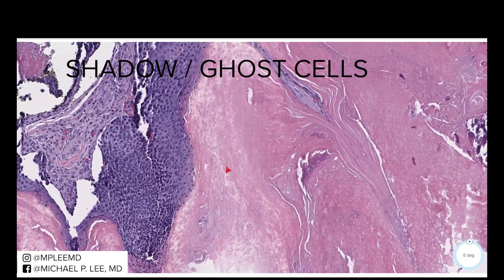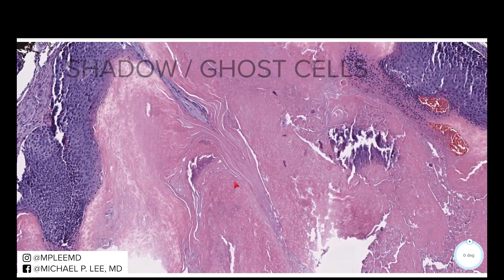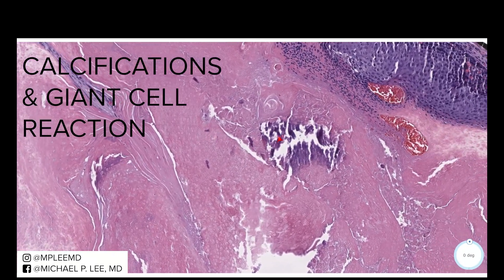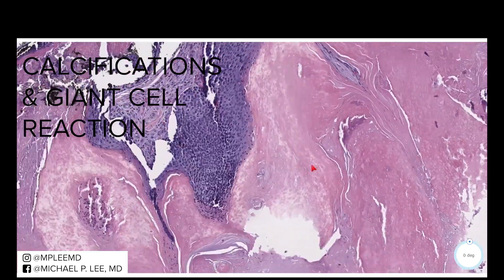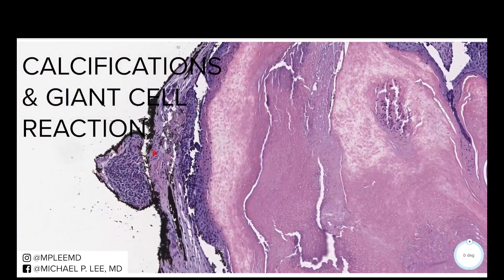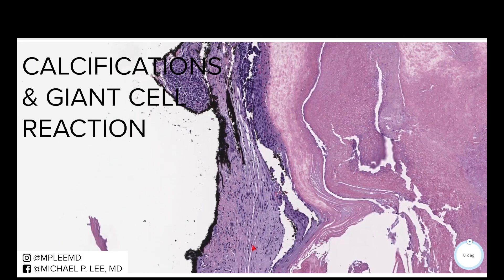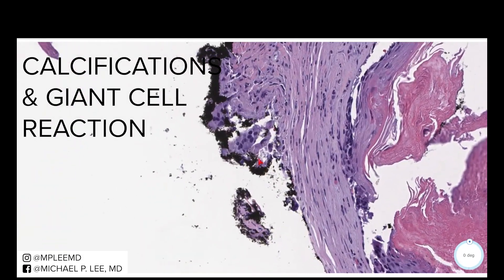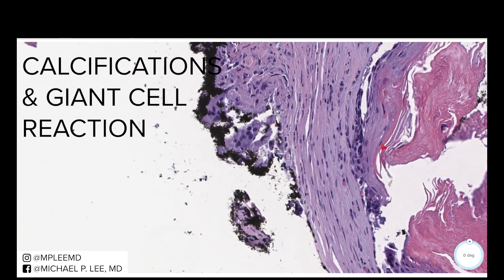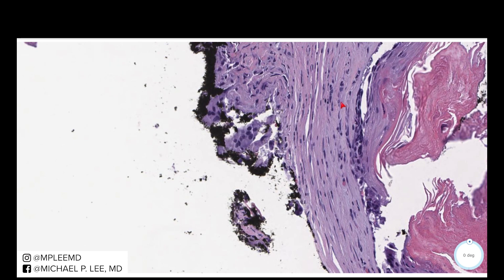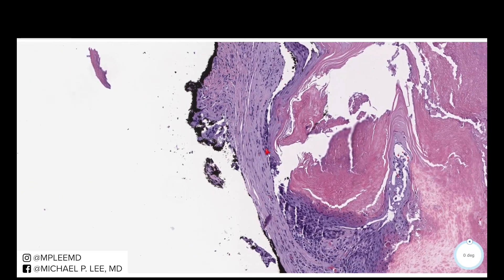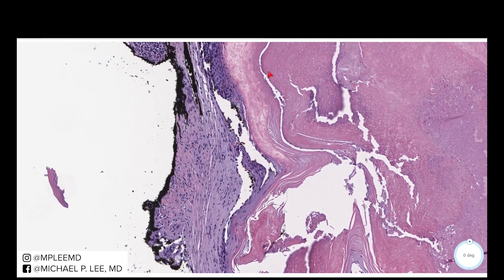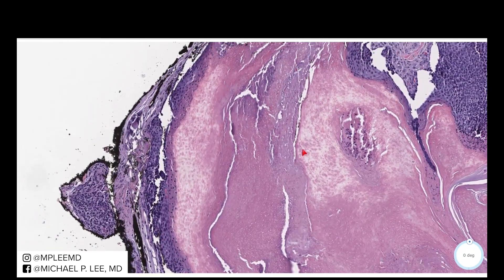One important thing to note is that you can see some calcification sometimes near the center. Also, you can frequently have a multinucleated giant cell tissue reaction, especially when this material gets out into the actual dermis. You can see that this is a well-circumscribed nodule, and these are typically present in the mid to deep dermis.